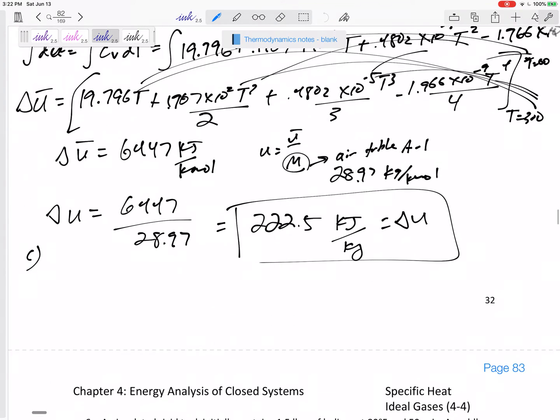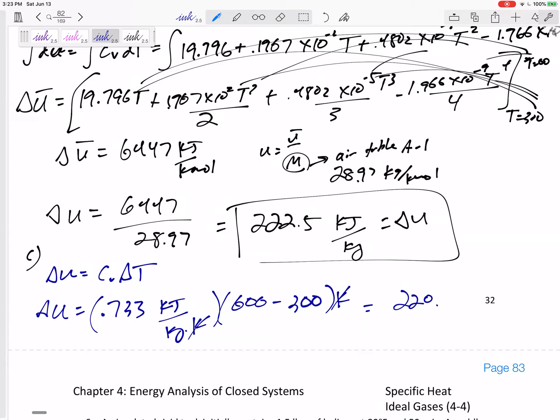Okay, so delta U is CV delta T. Delta U, I'm going to use the value at 450, 0.733 kilojoules per kilogram Kelvin, times 600 minus 300. I would get 220.0 kilojoules per kilogram.